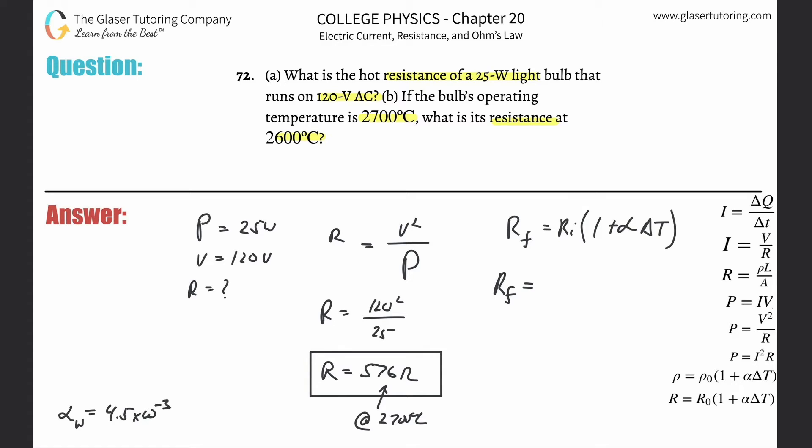So the initial is going to be the 576 multiplied by one plus my alpha of 4.5 times 10 to the minus three, that's just looked up. And now we got to plug in the change in temperature.